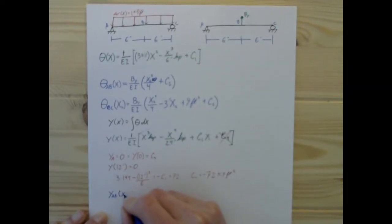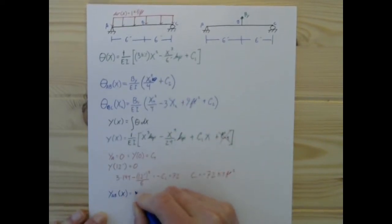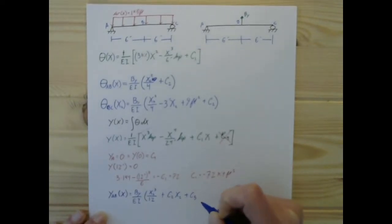The deflection due to this load, we're still figuring that out. So integrating this function, we're going to have by over E and I times x2 cubed over 12 plus some constant of integration that we knew, that we had before, C2, times x2, plus a new constant of integration, C5, I believe.